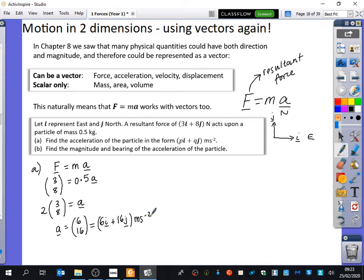So nothing really that's new there, just using the same formula, but this time using it with vectors. And then part B, I mean, we've done this a million times now, but I'm still going to do it anyway. Find the magnitude and bearing of the acceleration of the particle. So first of all, if I want to find the magnitude of the acceleration, in other words, I'm going to take the magnitude of the acceleration vector. Anyone could remind me, so I'm going to ask Locke, tell me how I find the magnitude of this.